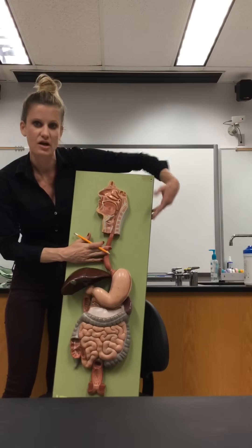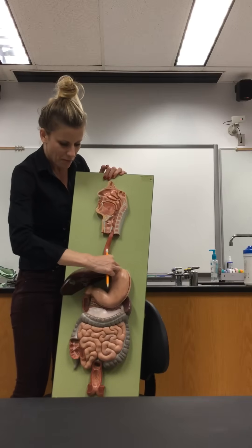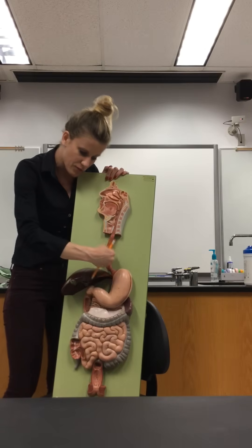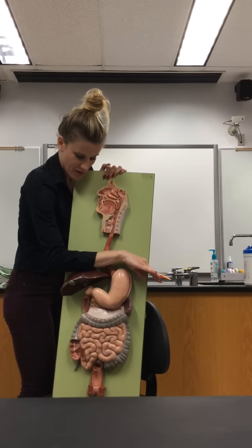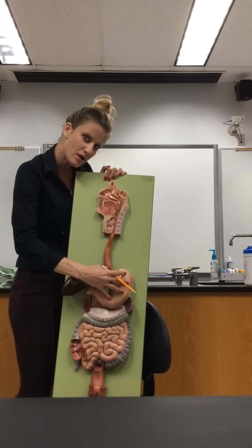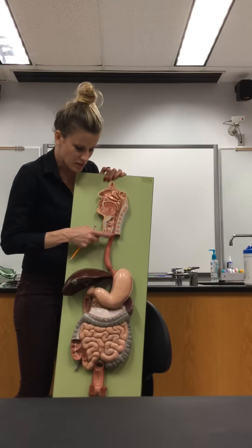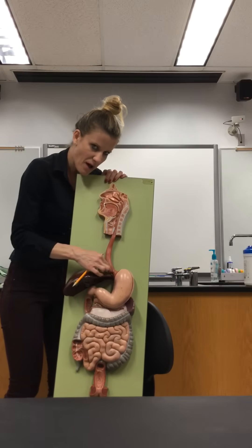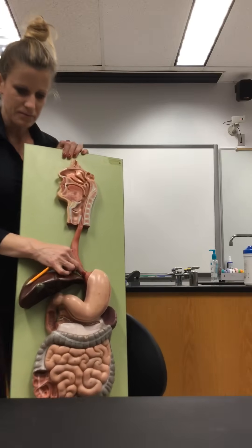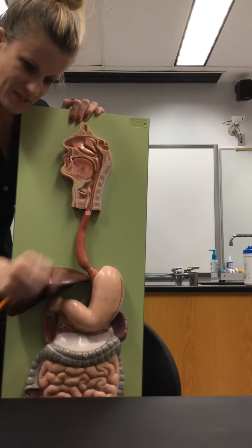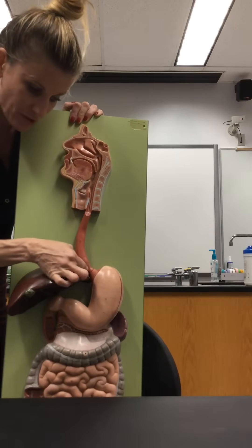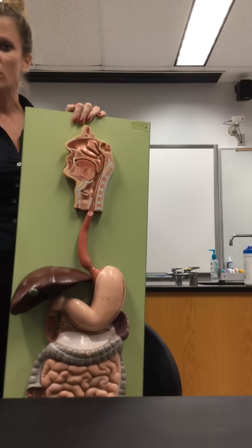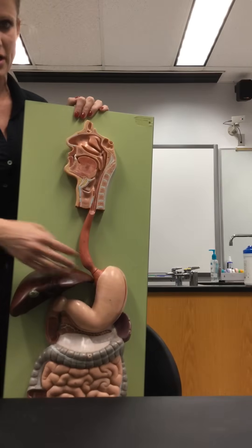After the pharynx, food goes down into the esophagus — this long, thin, muscular tube that carries food down through the thoracic cavity, right through the diaphragm, and down into the abdominopelvic cavity. This is the esophagus that carries food into the stomach. At the very bottom of the esophagus, where it looks tight and thinner, is the lower esophageal sphincter, also called the cardiac sphincter because it's right by the cardia of the stomach.